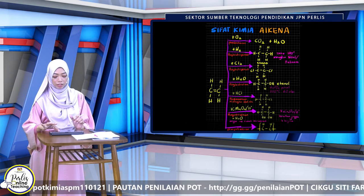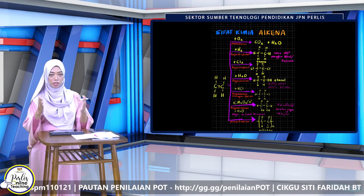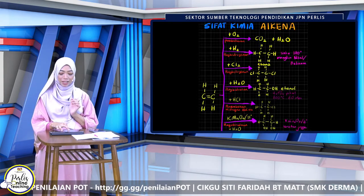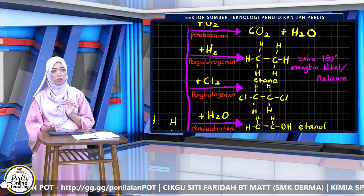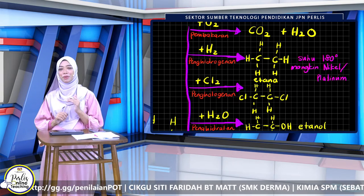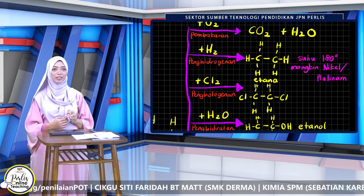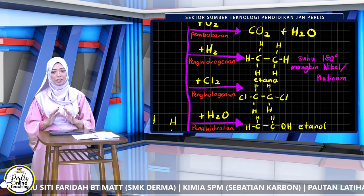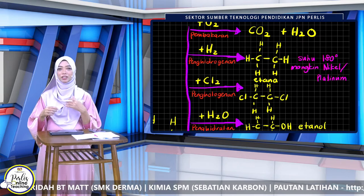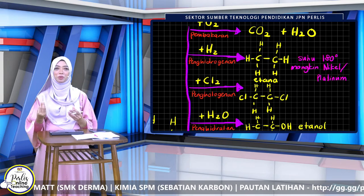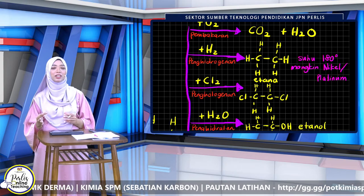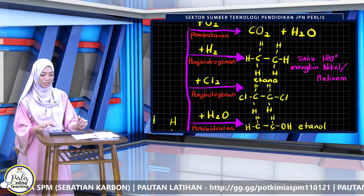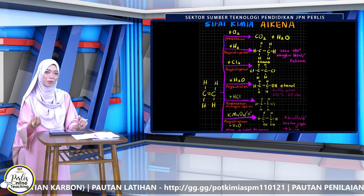Alkena pula ada tujuh tindak balas. Tengok satu muka surat Cikgu, masukkan semua ketujuh-tujuh tindak balas. Cuma baru Cikgu perasan dalam YouTube Cikgu, Cikgu tertinggal: tindak balas penghidrogenan perlu pada suhu 180°C dan mangkin nikel ataupun platinum. Siapa yang tengok YouTube Cikgu perasanlah Cikgu tak sebut benda ni. Biasa kita belajar macam tu — kita buat nota, bila kita buat soalan sepanjang tahun tu kita dapat ilmu baru, kita tambah pada nota kita. Itu cara Cikgu belajar, macam mana Cikgu skor kimia. Cikgu guna flash note satu muka surat. Bila kita belajar, kita jumpa ilmu baru, kita tambah. Buat sendiri, jangan salin yang orang punya.